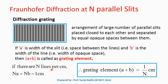If there are N number of lines per centimeter, we can write N×A plus N×B is equal to 1 centimeter. This gives us the grating element A plus B equal to 1 upon N centimeters. This is the relation between the grating element and the number of lines on the grating per centimeter. Remember: A plus B equals 1 upon N.